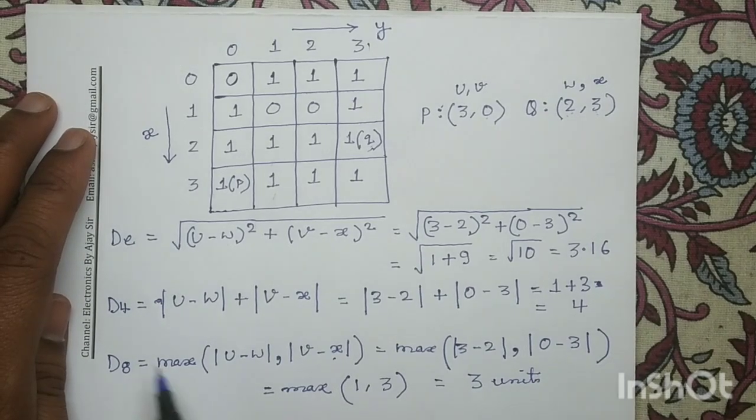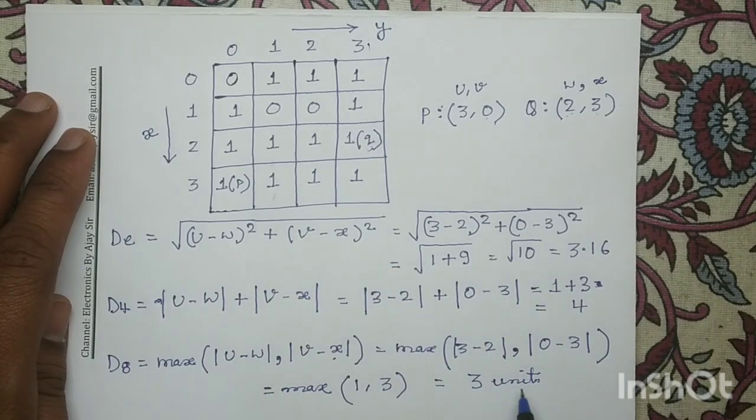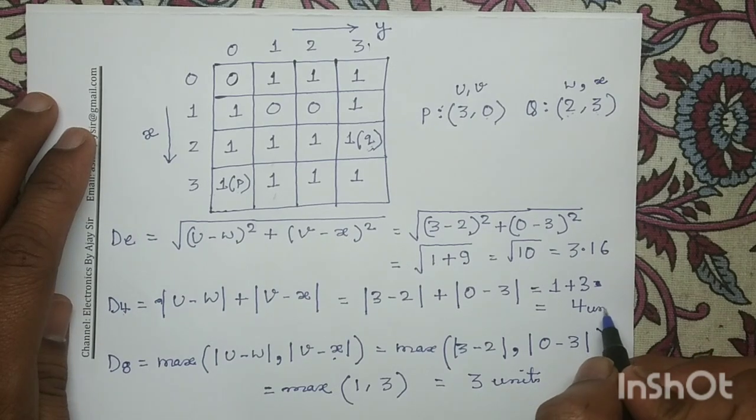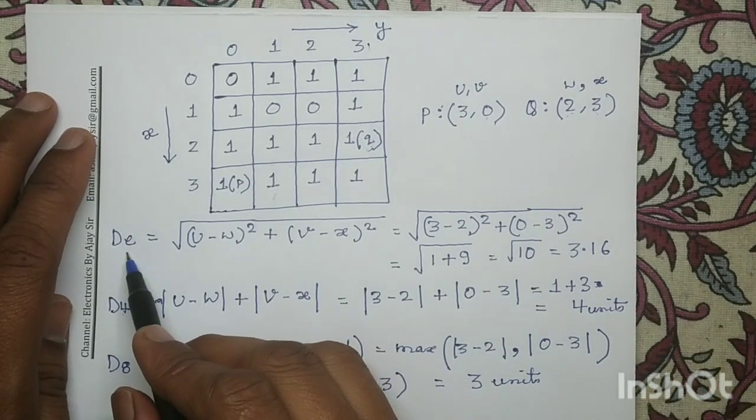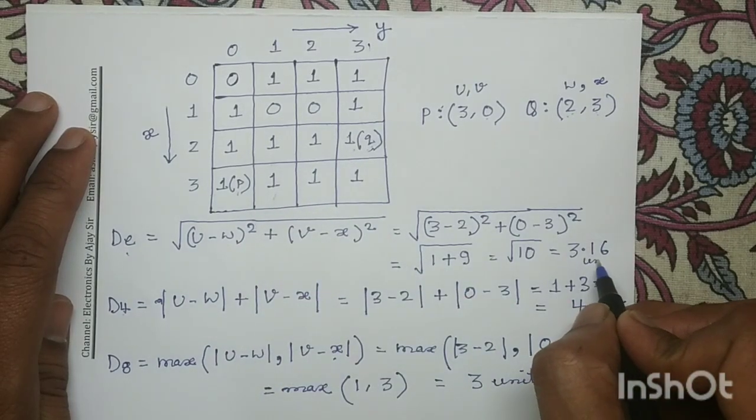D8 distance between pixel P and pixel Q is 3 units. Similarly, D4 distance between pixel P and pixel Q is 4 units, and DE distance, Euclidean distance, between pixel P and pixel Q is 3.16 units.